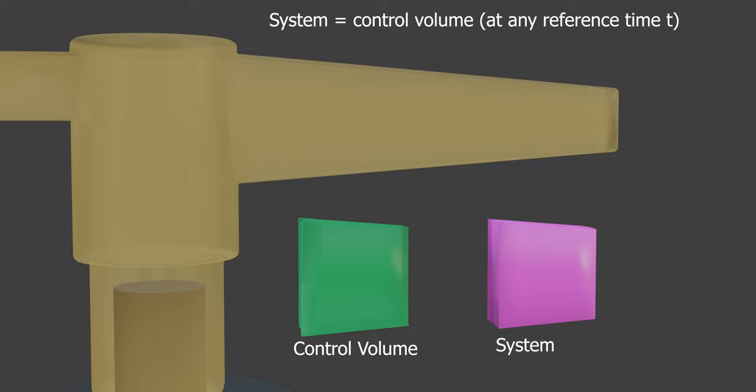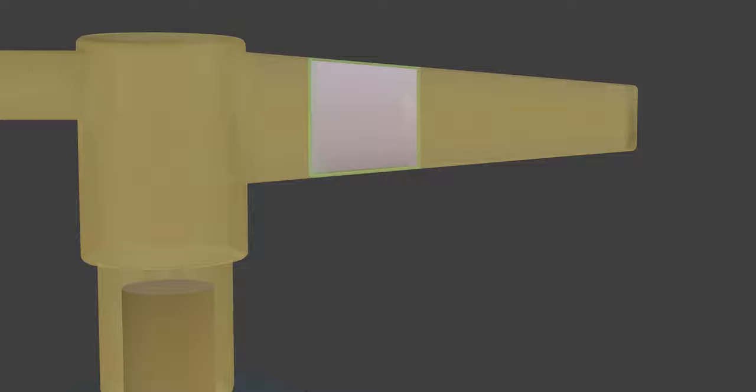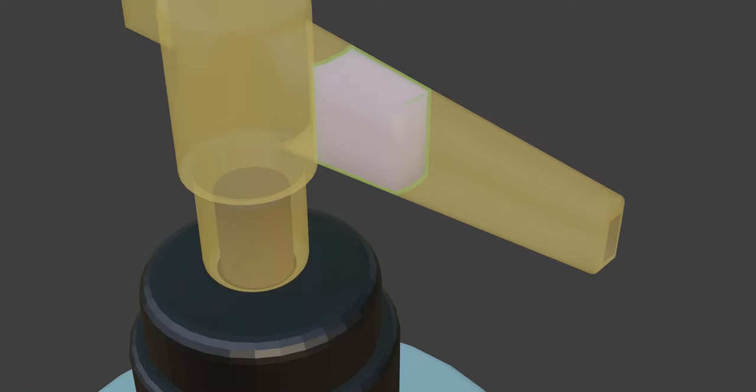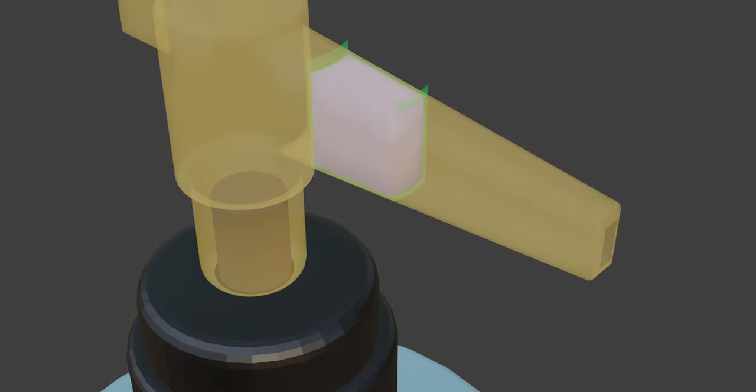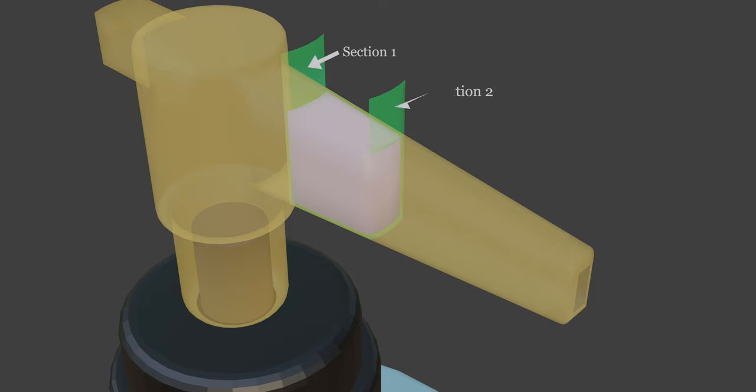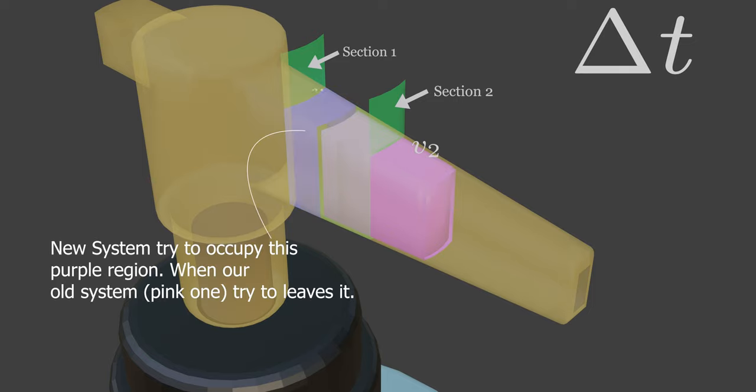The control volume is fixed, and the liquid or system passes through section 1 and 2, also called control surface. When time passes, or during time interval delta t, the original system leaves the control volume with velocity v2, and then new system tries to occupy its space with velocity v1.